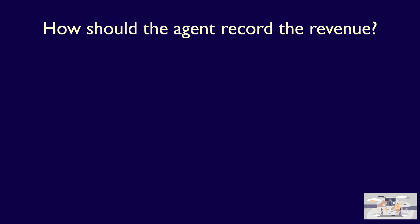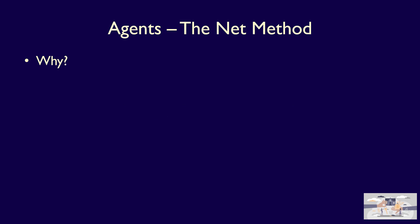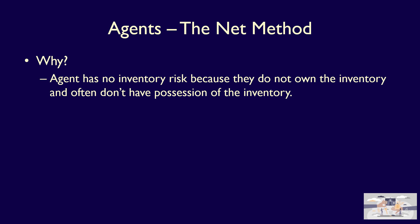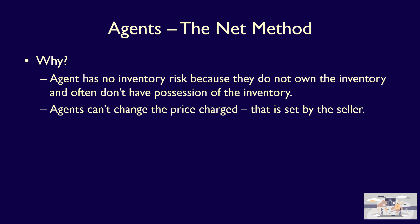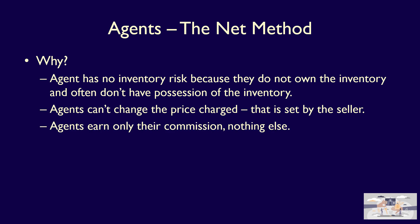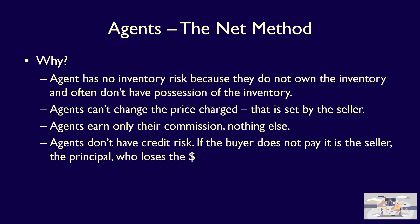Which is the correct method to record revenue when an entity is acting as an agent? The answer is the net method. Why? Because MaxSold has no control over the actual inventory item, so they have no right to report 100% of the selling price — in this case, $100. It's also because MaxSold has no control over the price that the item is sold for; that's controlled by the seller. Another fact is that MaxSold earns only the commission, so that's the only portion they should recognize as revenue. And finally, MaxSold does not take any credit risk. If the buyer doesn't pay the $100, MaxSold simply does not pay the seller. The risk of non-payment by the buyer, which is the credit risk, is borne totally by the seller. If the buyer does not pay, the seller is out of pocket the $100, not MaxSold.